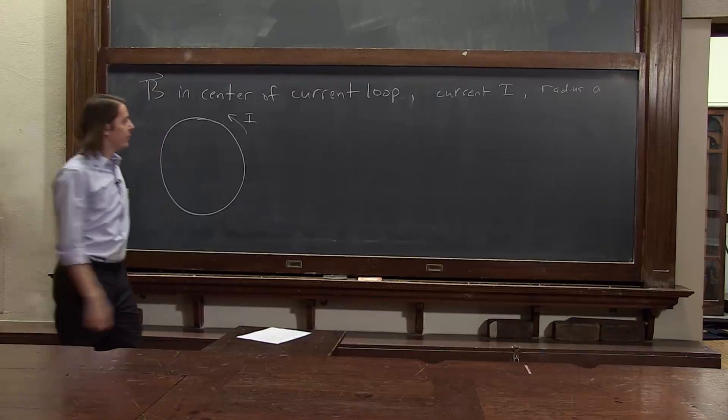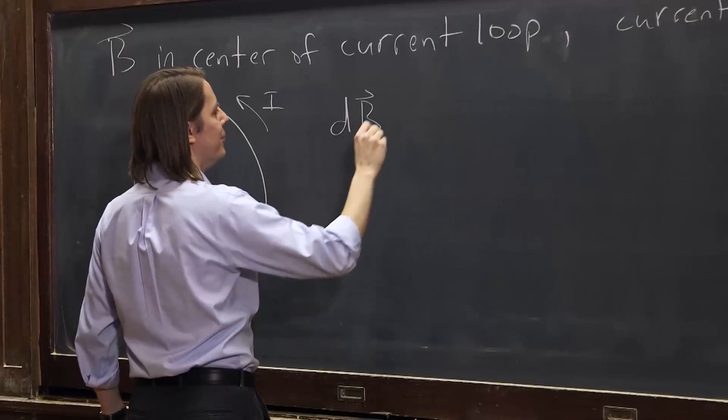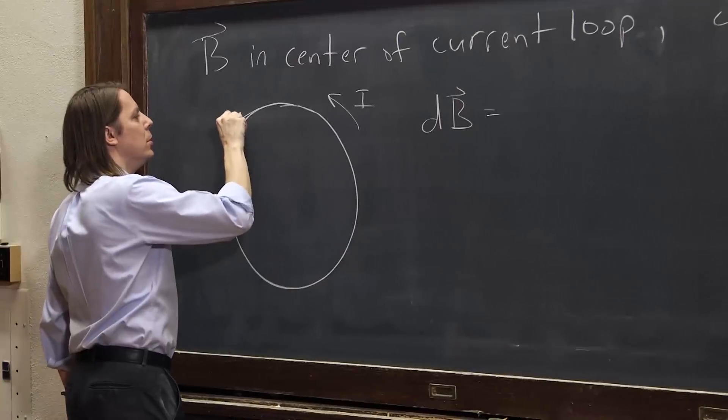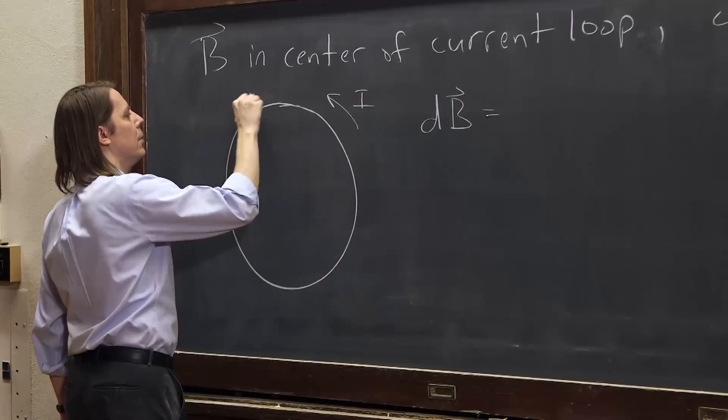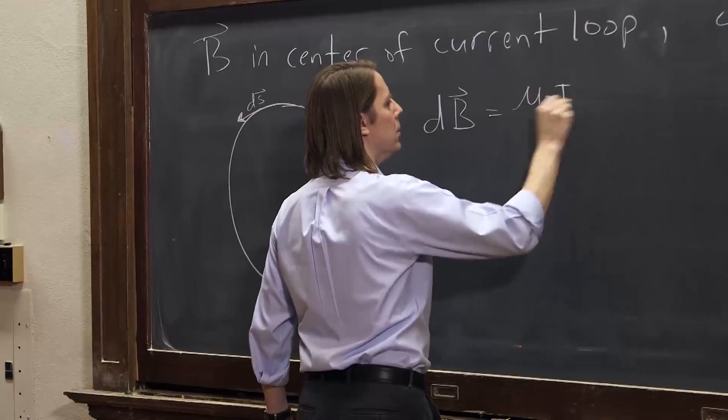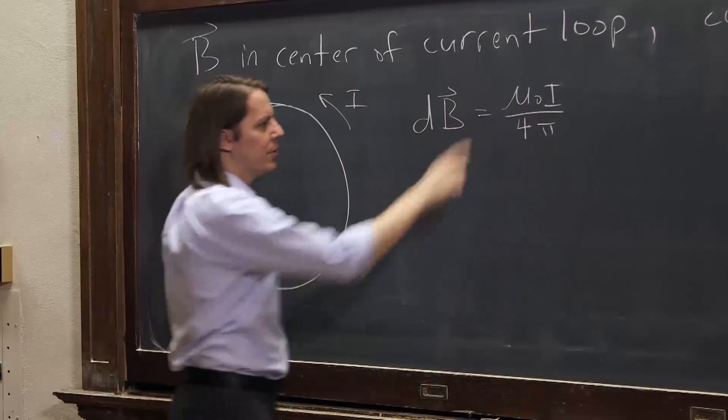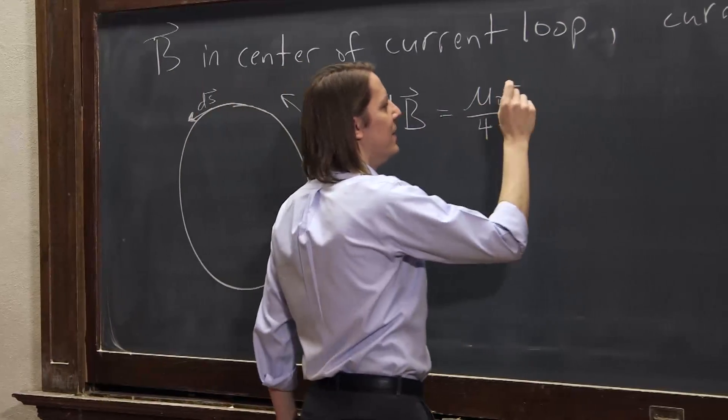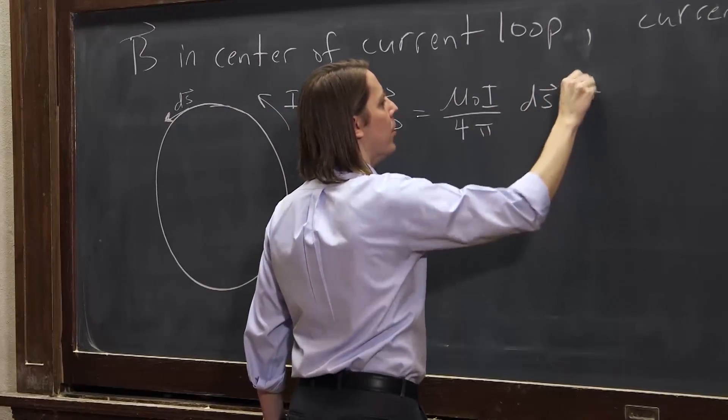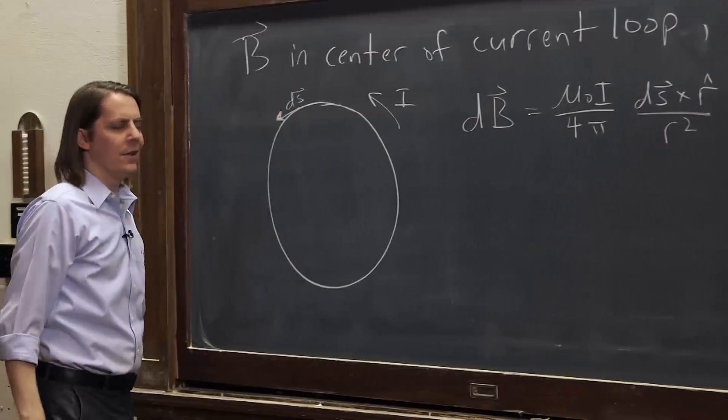So we know we start with Biot-Savart, that the little differential element of magnetic field B, dB, that is due to a little piece of the current, dS, is equal to μ₀I over 4π. So permeability of free space, current 4π, times dS crossed with r hat over r squared. That's Biot-Savart.